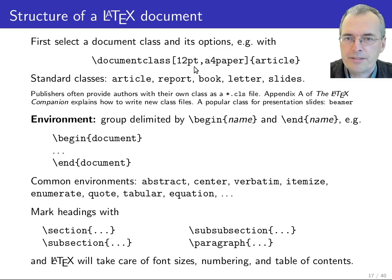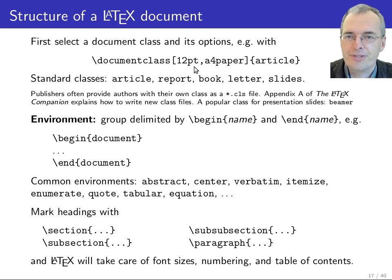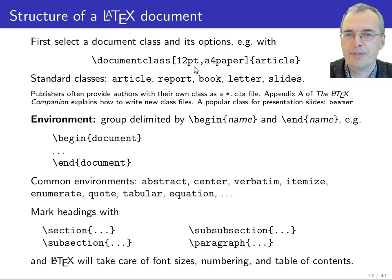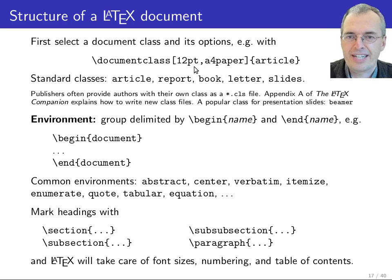Scientific publishers often provide their own class files. If you submit a paper to a journal, check their web pages for suitable class files. Typical examples in computer science are the Springer Lecture Notes in Computer Science and the IEEE proceedings and journal class files.